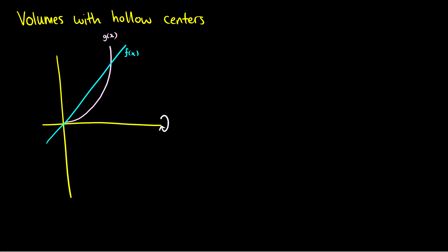So what does this look like? We take the outermost circle from f of x, and then the inner circle from g of x — we have another circle inside. In order to get the area between the two when we rotate, we take the outermost circle and subtract the innermost circle, and that gives us the area in between.